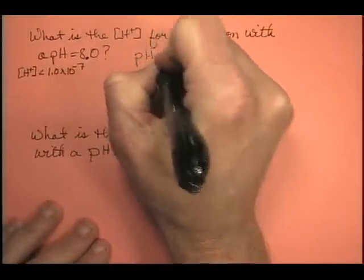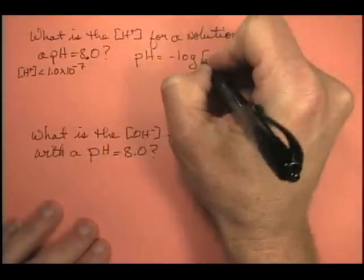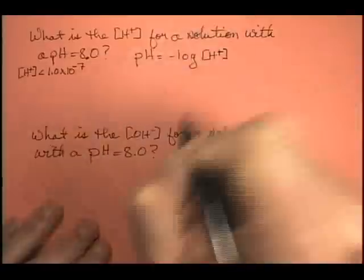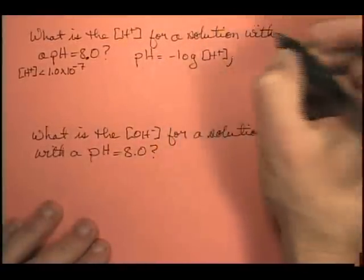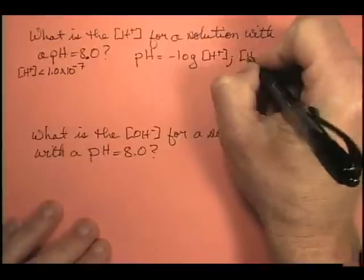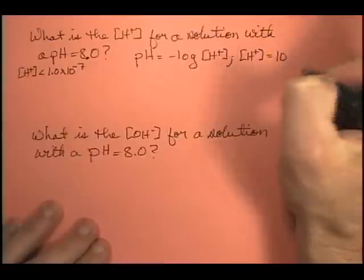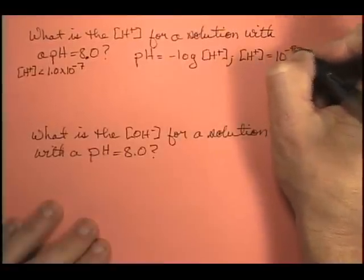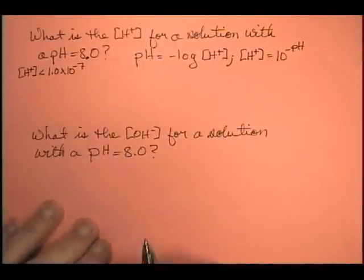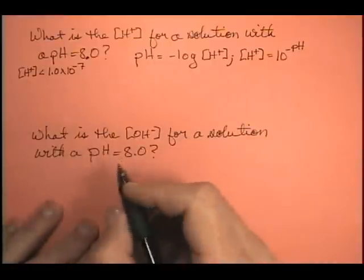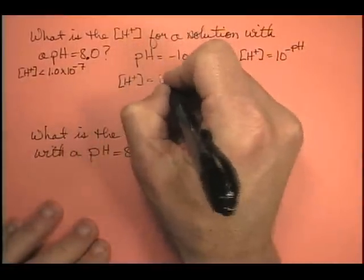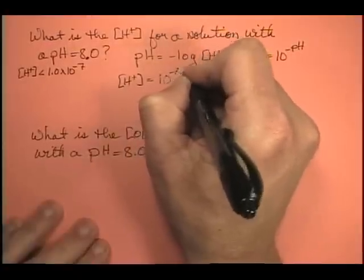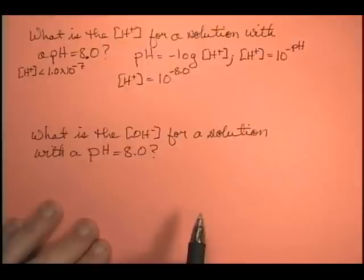We know that pH is equal to the negative log of the hydrogen ion concentration. We can rearrange this and say that the hydrogen ion concentration is equal to 10 to the minus pH power. So I know that my hydrogen ion concentration is equal to 10 to the minus 8.0, since my pH is 8.0.